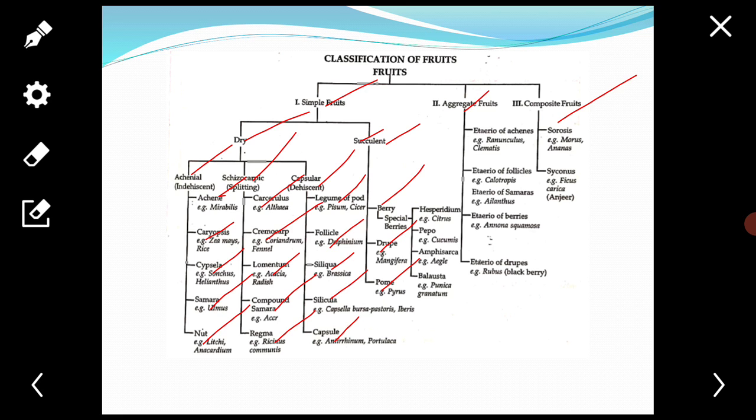Fruits derived from the superior ovary are date, brinjal, grapes, etc. And the fruits which are derived from the inferior ovary are guava, banana, pomegranate, jamun, etc.